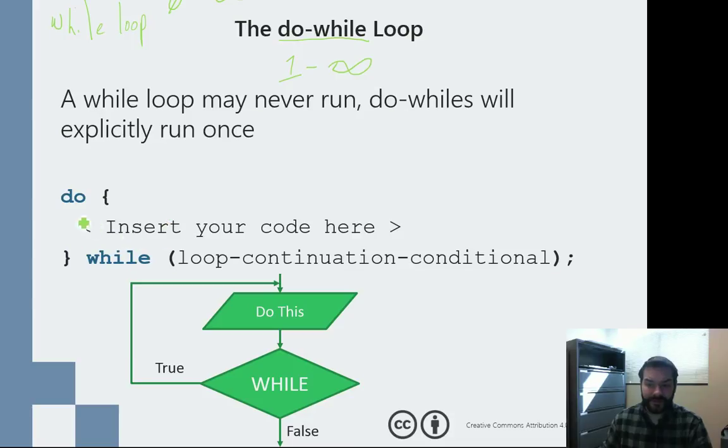And if we take a look at the code, we can see kind of that in action. We see, first we say do, then curly brace. Notice there's no conditional statement over here. There's no if situation here. What happens is we do this, we do this line of code, we get down here, we get to the end. That's when the conditional statement actually gets evaluated.